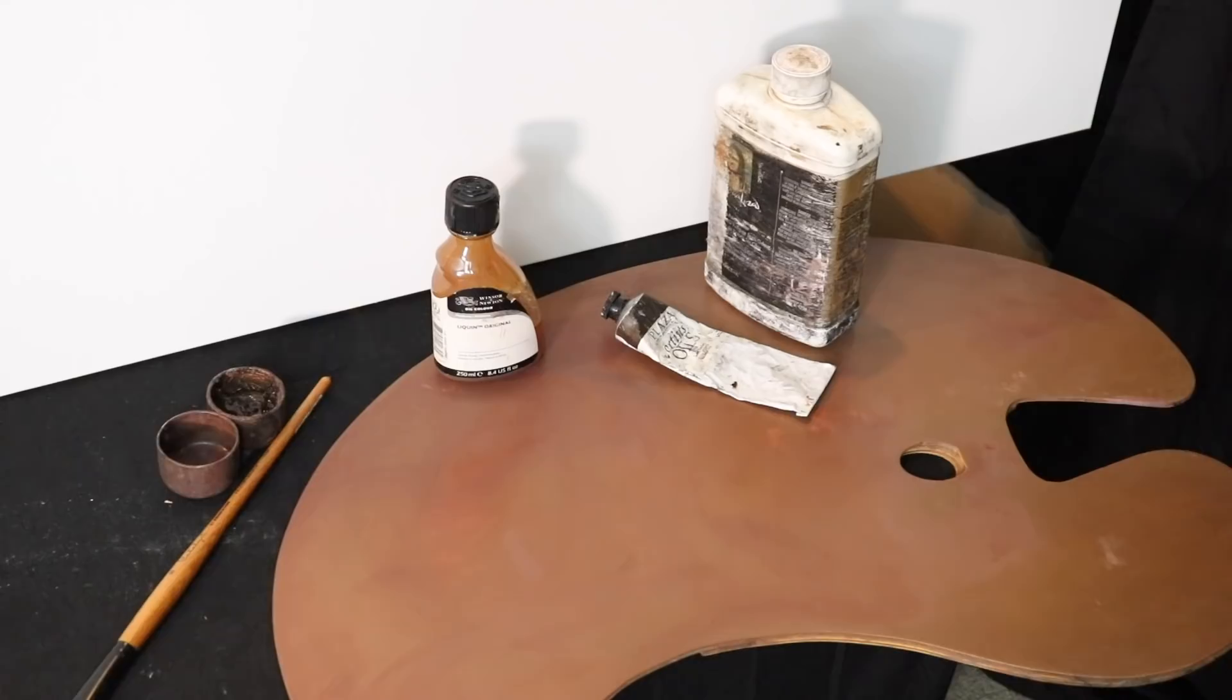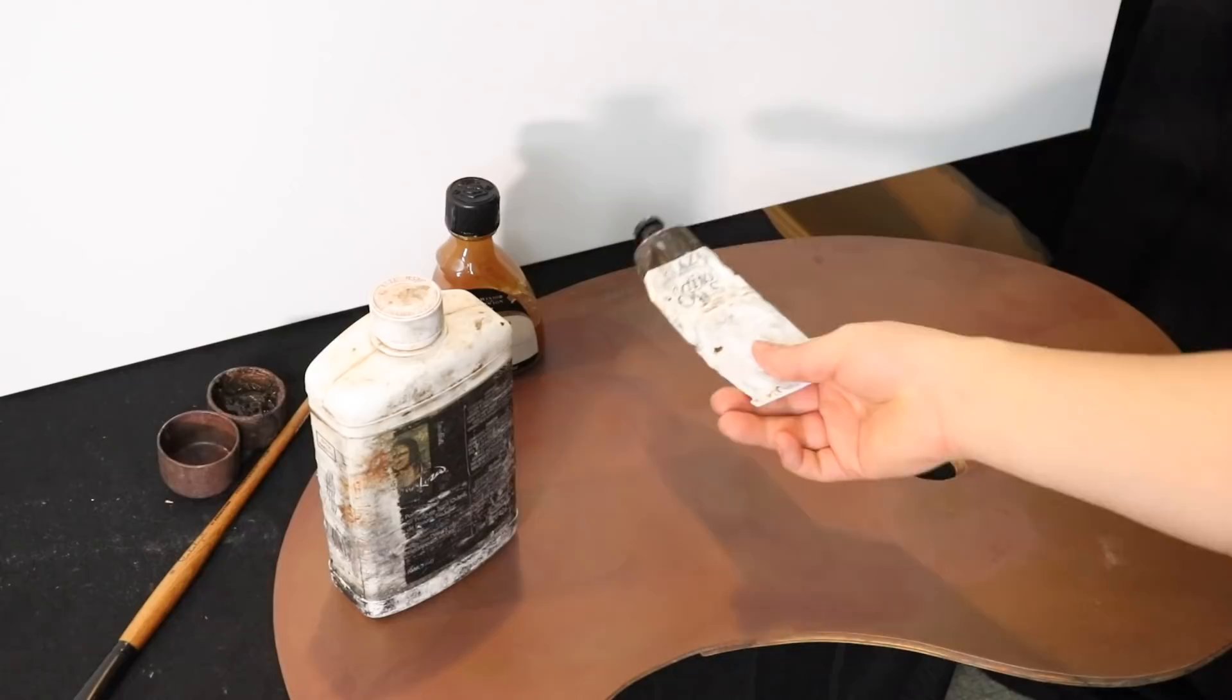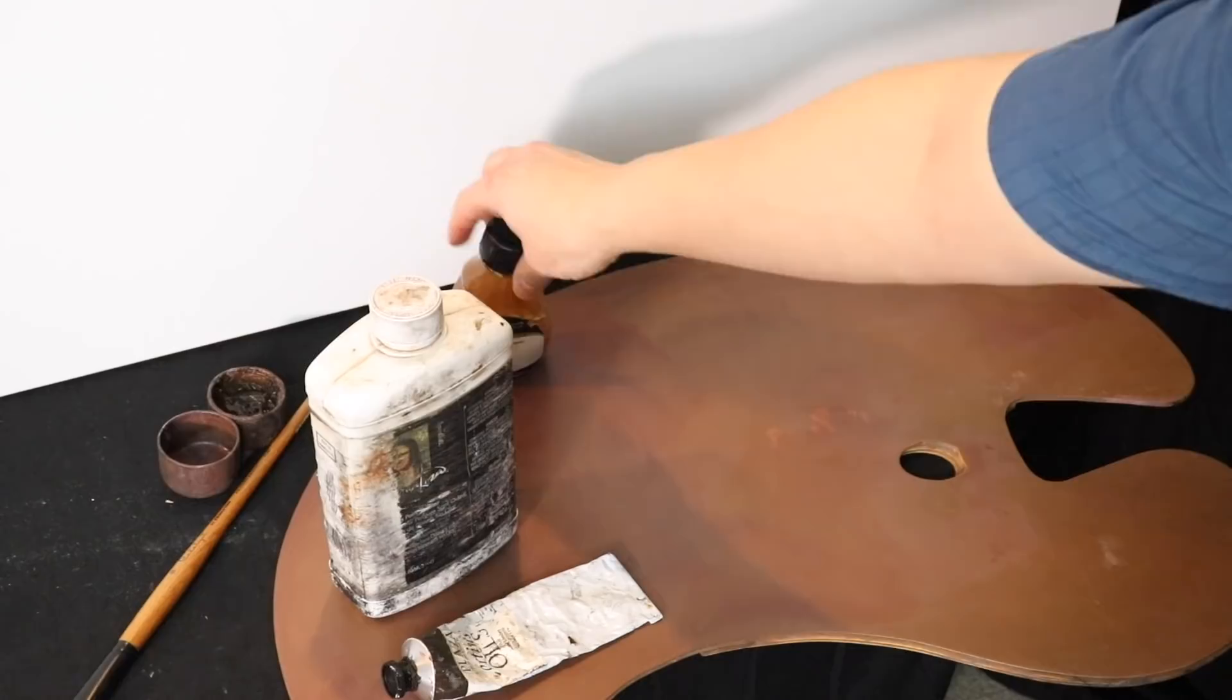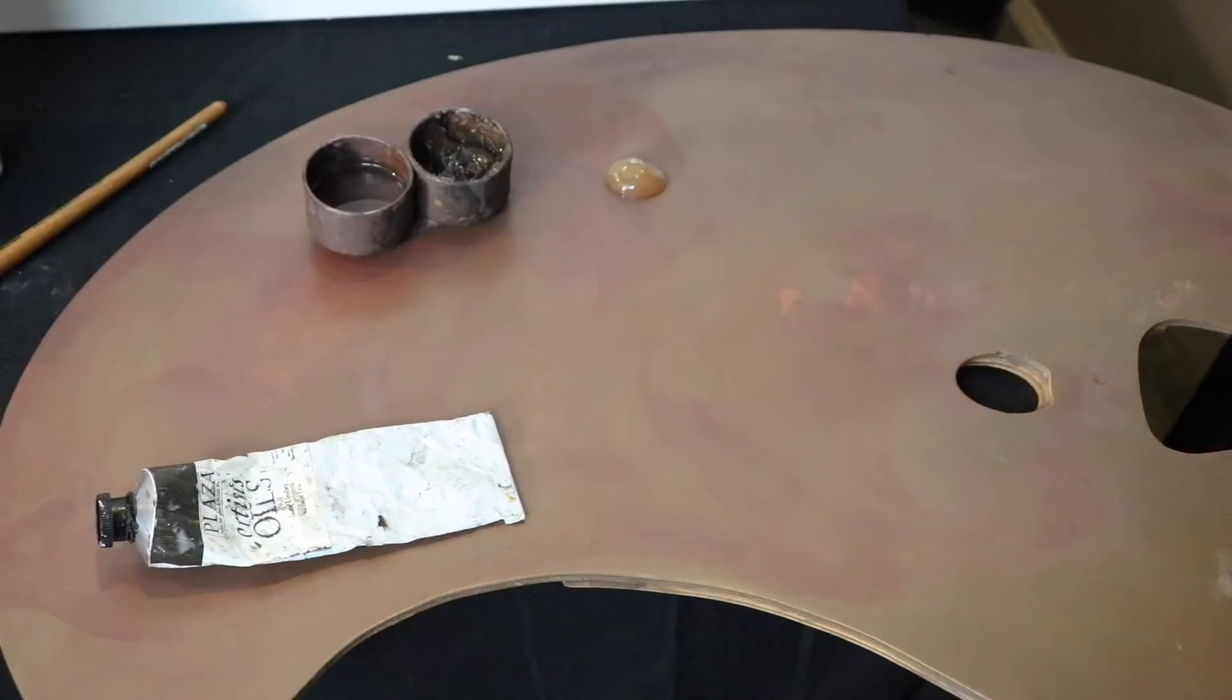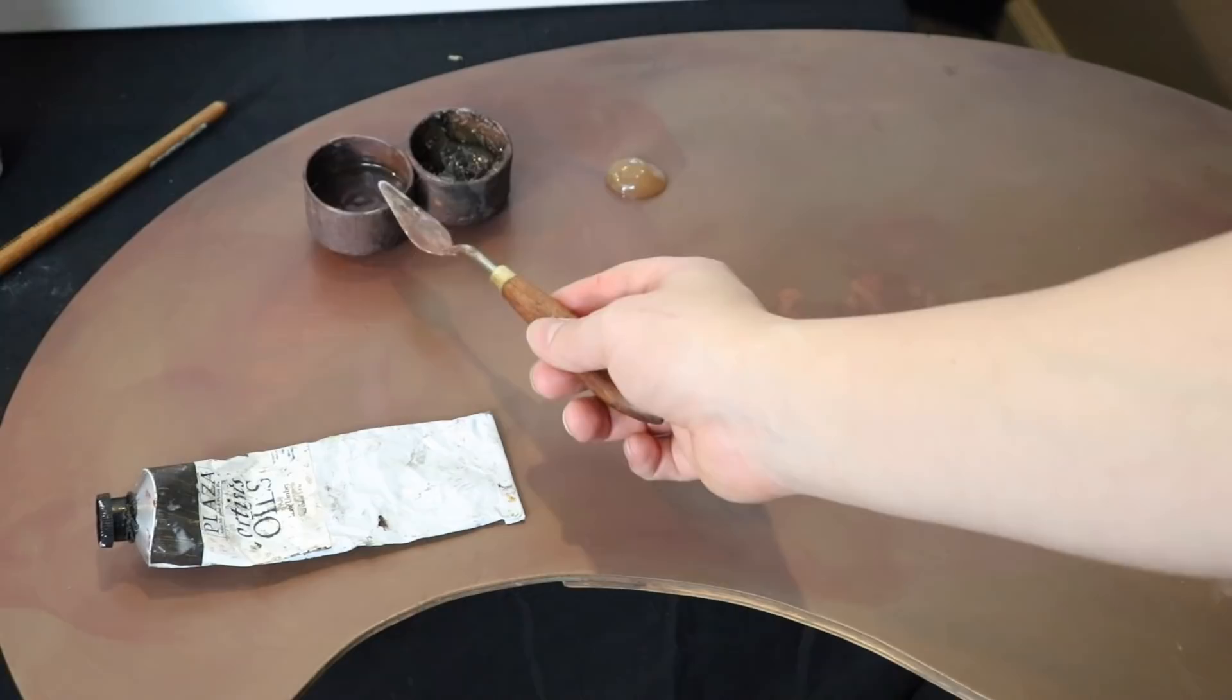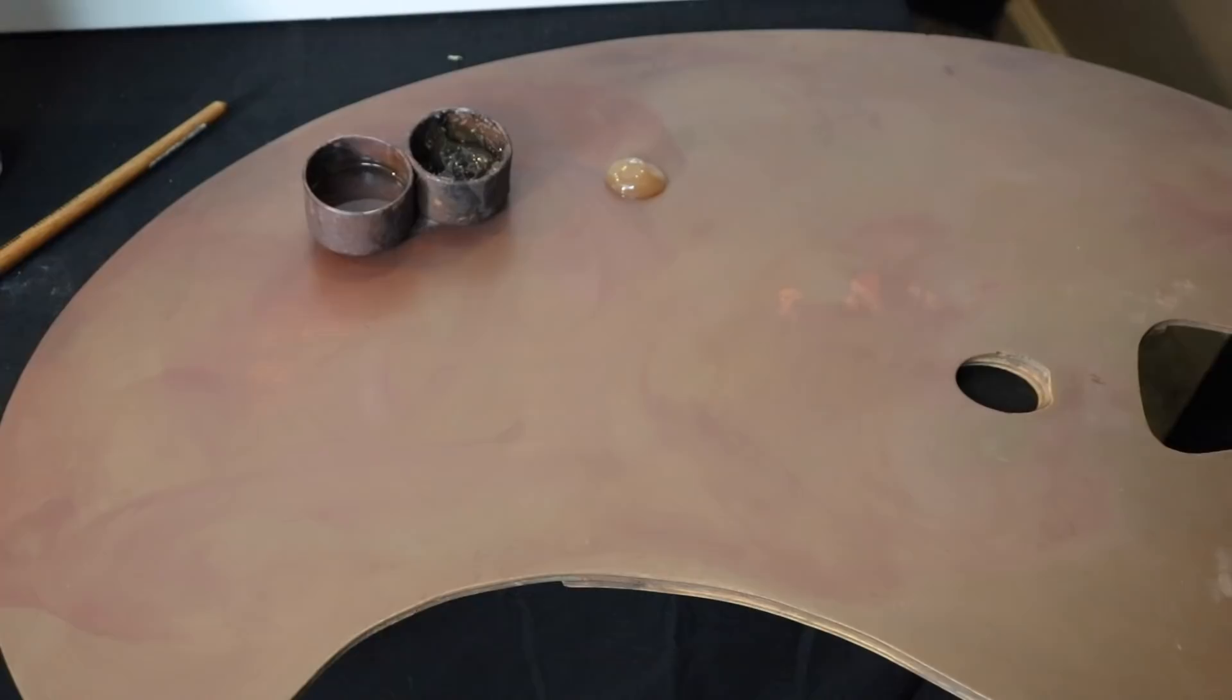So what we have here is odorless mineral spirits, just raw umber, pretty cheap yet still artist grade. This is Plaza brand artist oils, raw umber and some medium. So this is Liquin Original. Not going to use too much medium, however. So now what we have here is our odorless mineral spirits and our medium. The next thing we want to do is combine a little bit of our paint with the medium, but not too much.